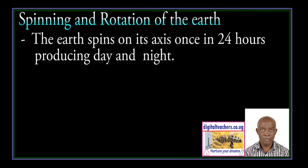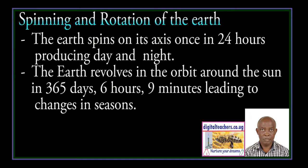The earth spins on its axis once in 24 hours, producing day and night. The earth revolves in its orbit around the Sun in 365 days, 6 hours and 9 minutes, leading to changes in seasons.